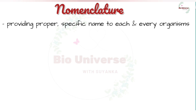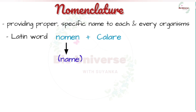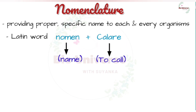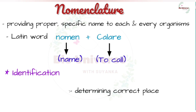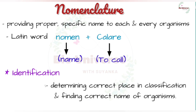The word nomenclature is derived from the Latin word nomen, meaning name, and calere, meaning to call. Nomenclature or naming is only possible when the organism is described correctly and we know to what organism the name is attached to. This is called identification.